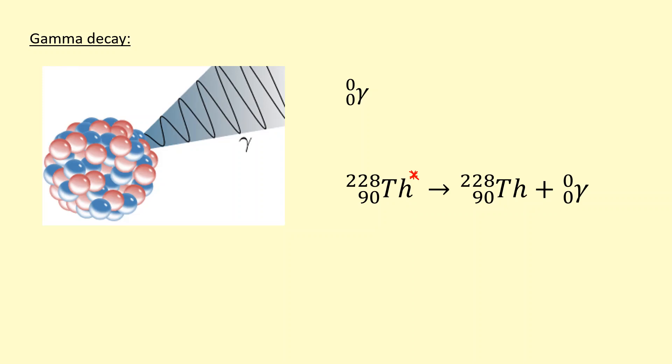This one had a bit too much energy and emitted that energy in the form of a gamma photon. We can work out the energy of a gamma photon using E = hf. The nucleus hasn't changed.